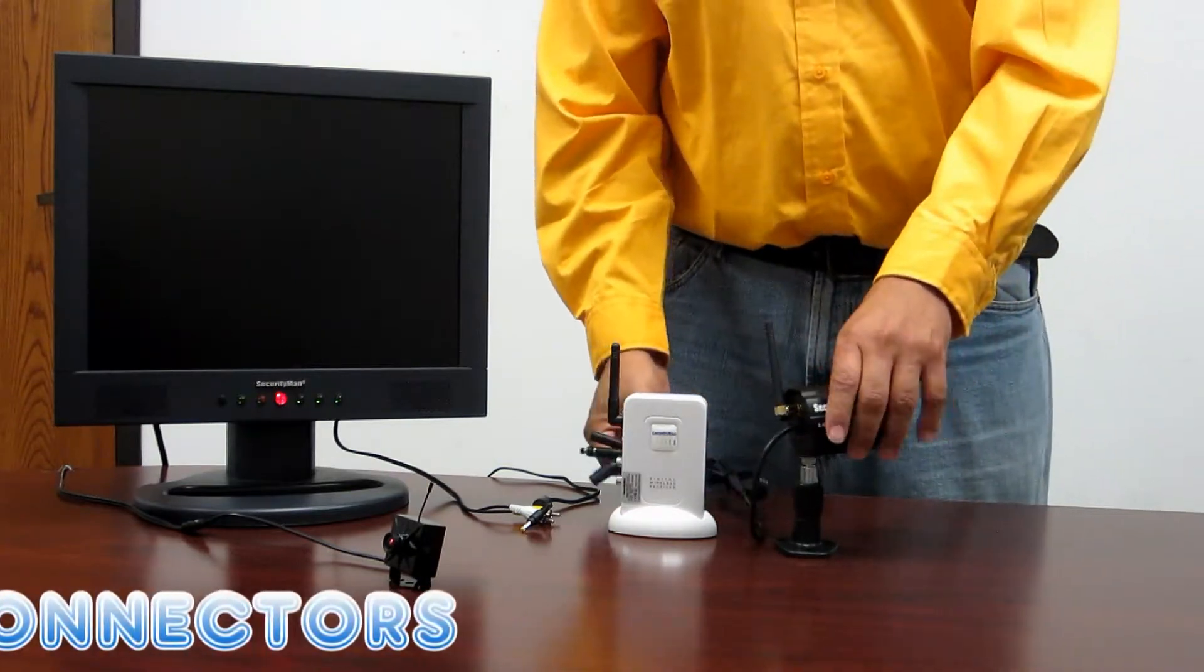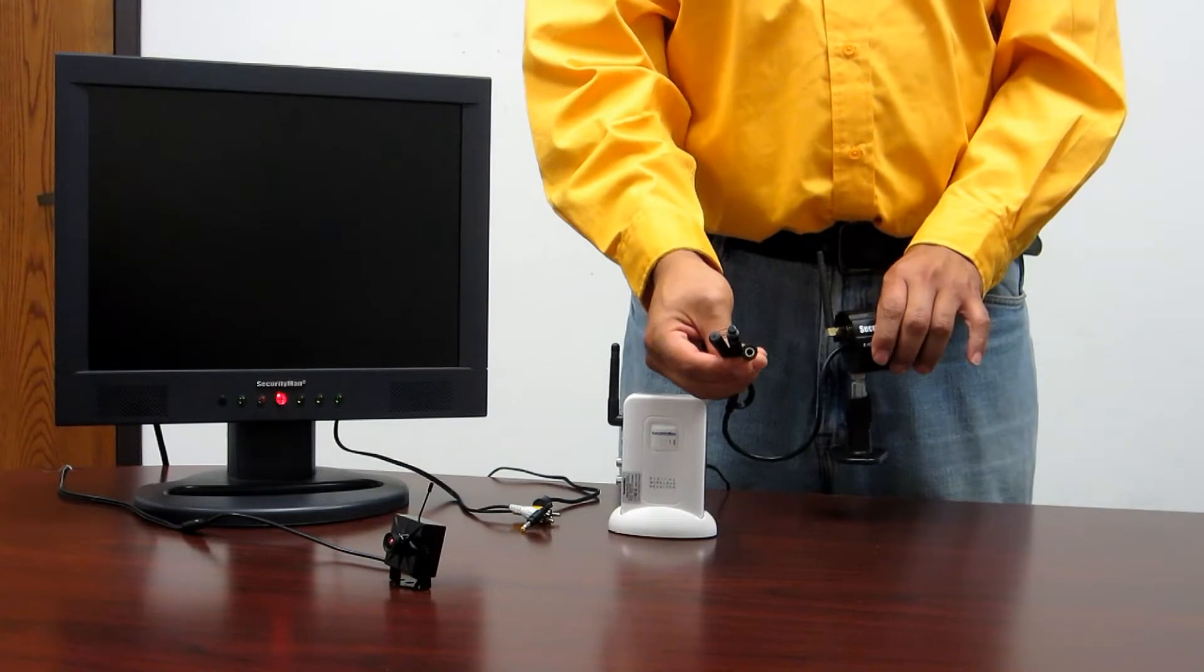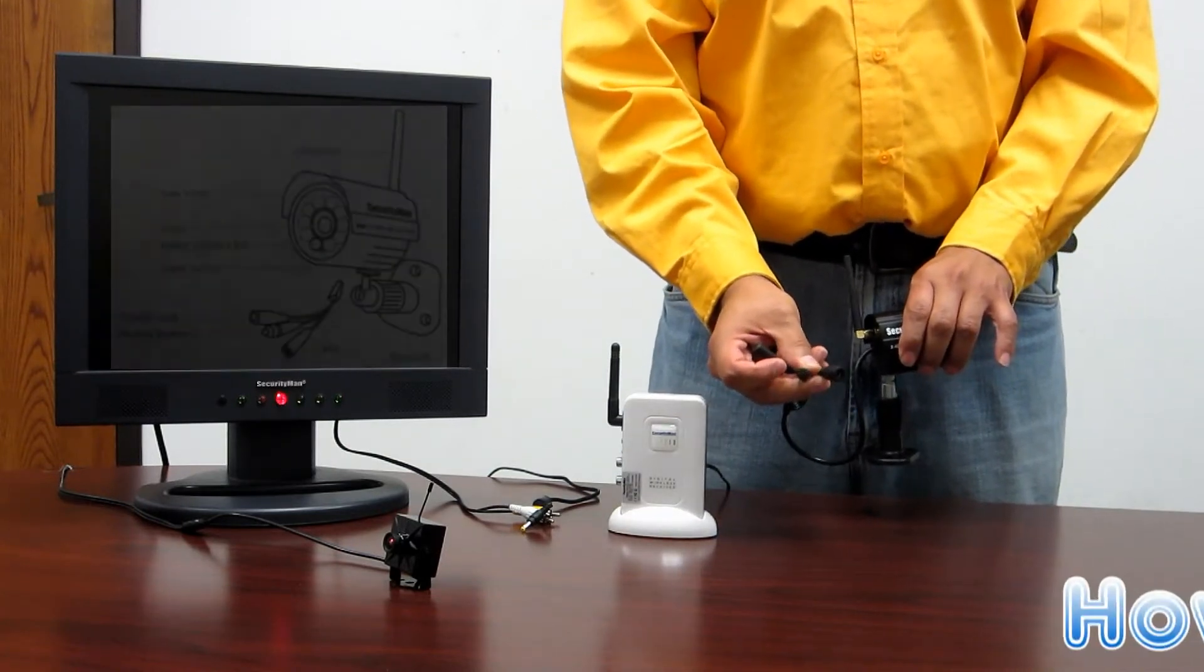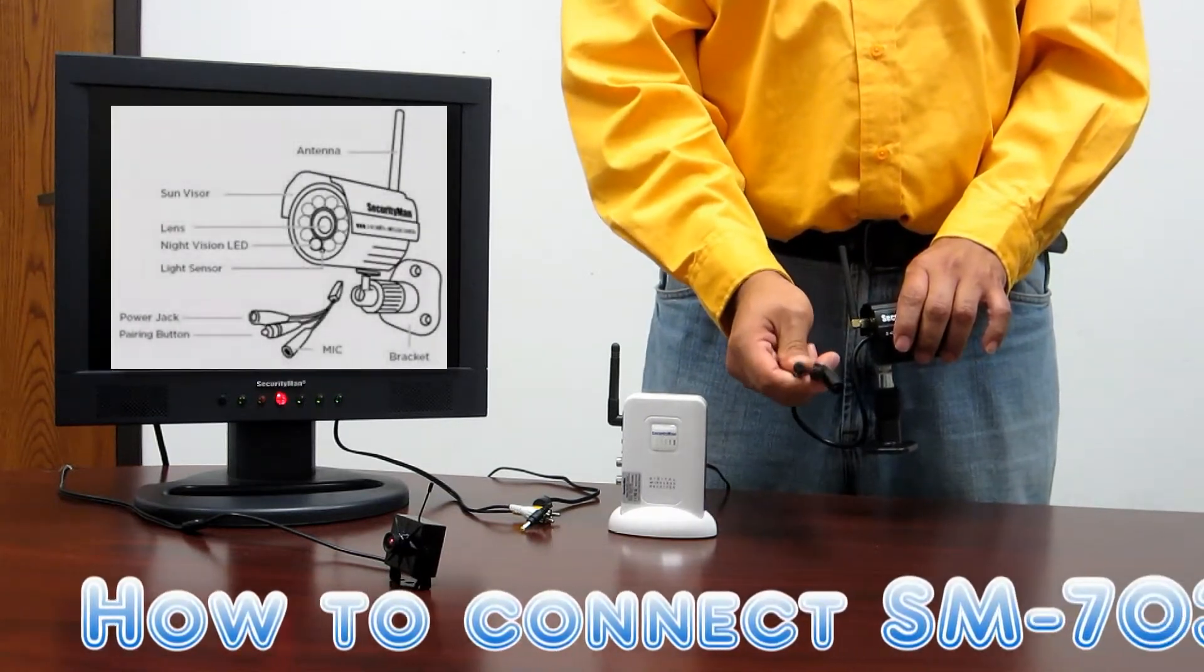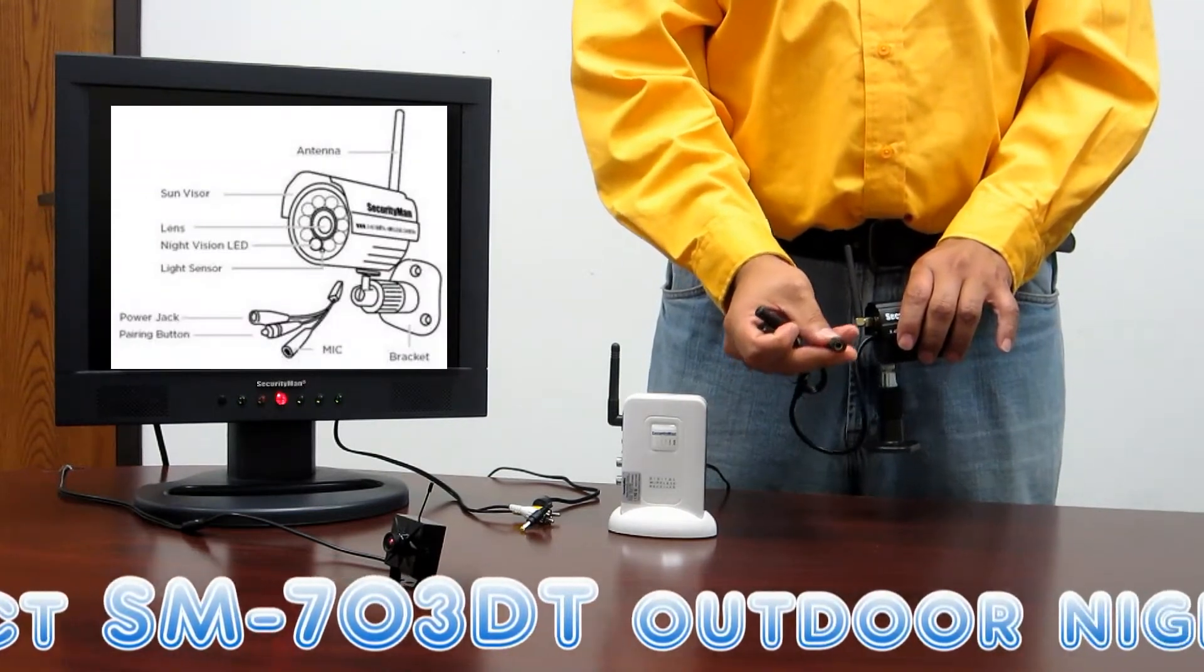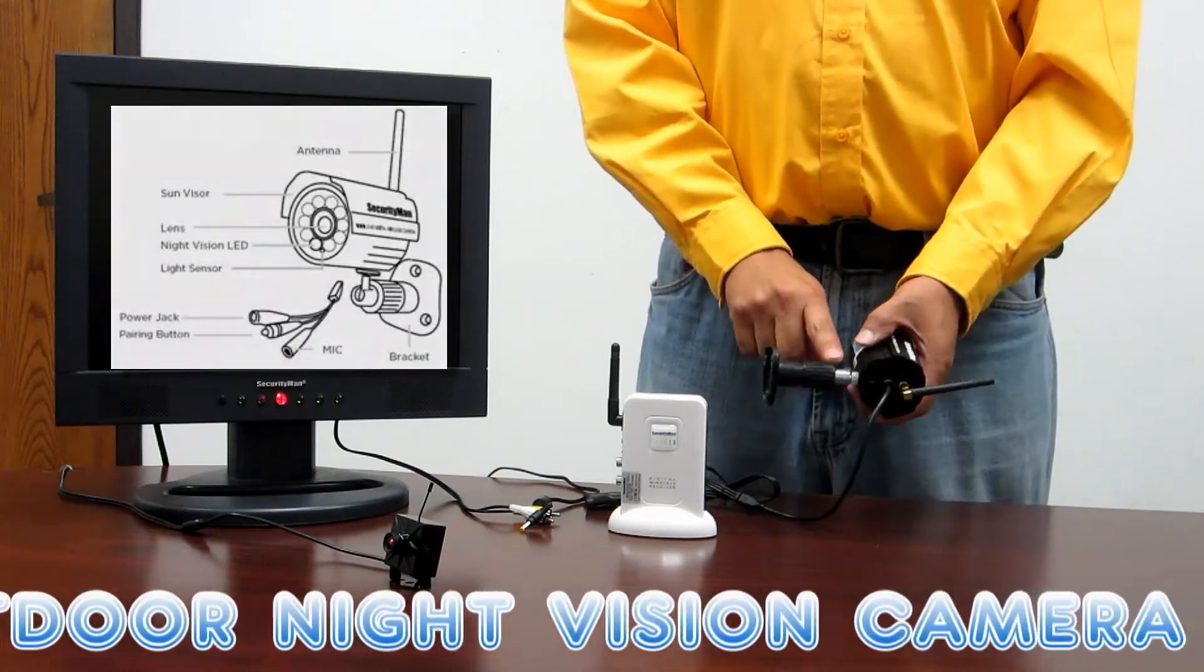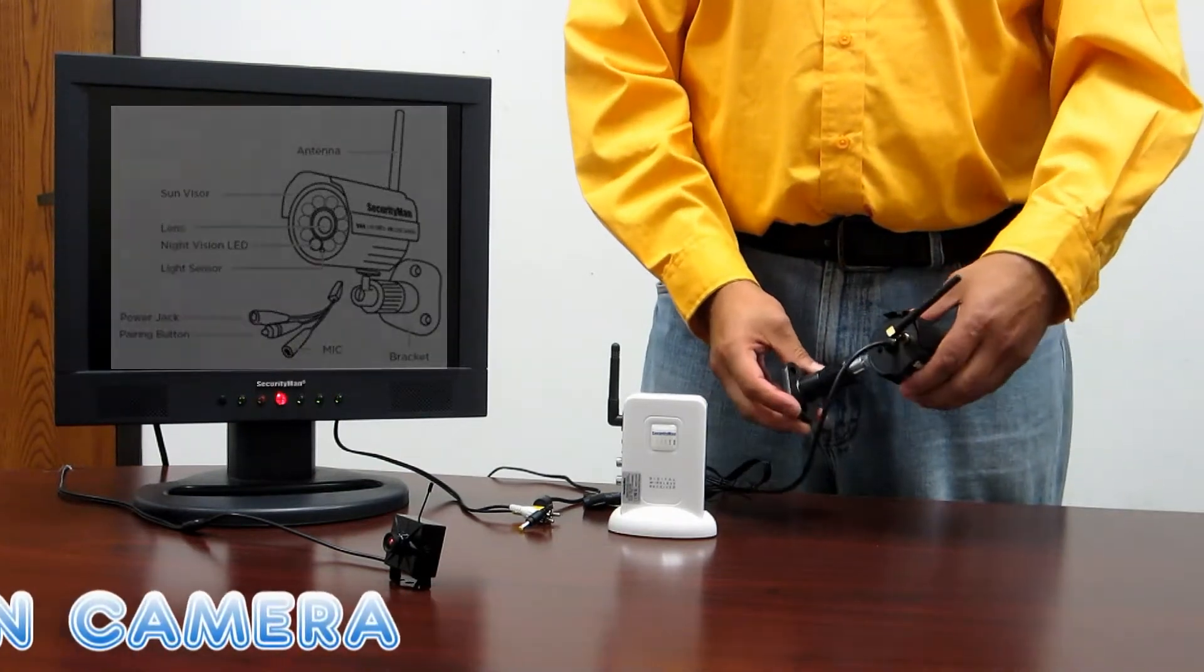On the DIGI OutAir camera there are three ends to the cable coming off the back of the camera. You've got your pairing button which is used to add cameras to your receiver, your microphone connection which is used to listen to audio, and your power socket which provides power to the camera itself. Both the antenna and the mounting bracket are already pre-assembled. All you have to do is tighten them up and mount your camera where you want it to go.